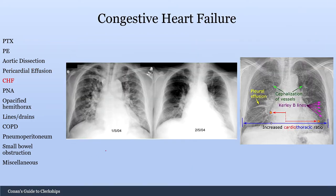Next, let's move on to congestive heart failure. On the left, you have somebody with a CHF exacerbation — you can see bilateral fluffy infiltrates throughout, with hilar fullness and pulmonary vascular congestion. People generally describe this as a wet X-ray. On the right is a month later when the patient's CHF has improved — a relatively dry radiograph compared to the prior X-ray.